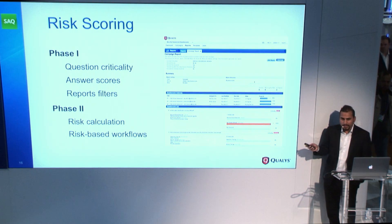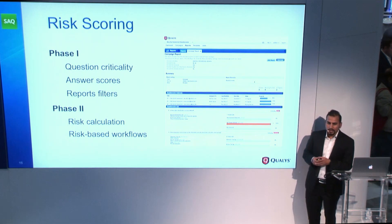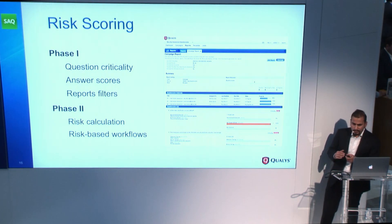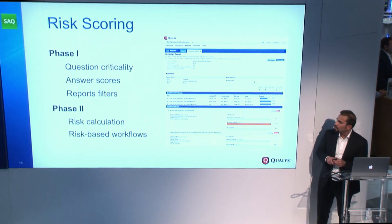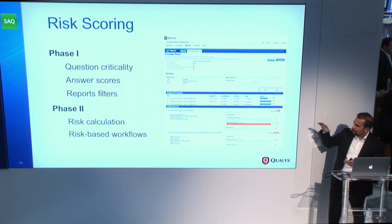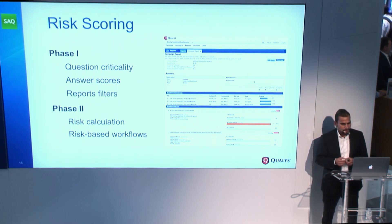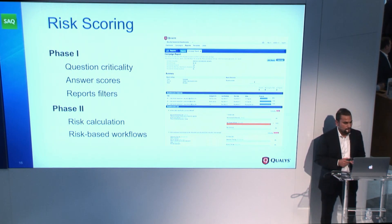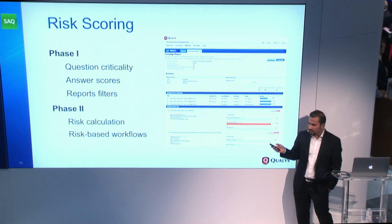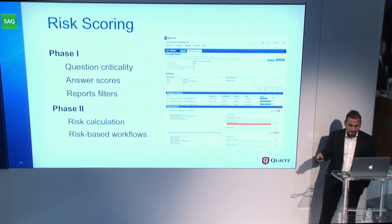We're introducing risk scoring at the end of February — it's a two-phase approach. In phase one, we'll allow you to define the criticality of questions: what questions are important for what vendors, and set weights for answer options. In phase two, based on conversations with customers, we'll introduce risk scoring and leverage that to drive risk-based workflows.